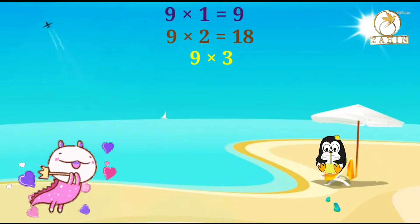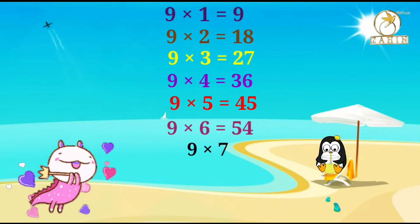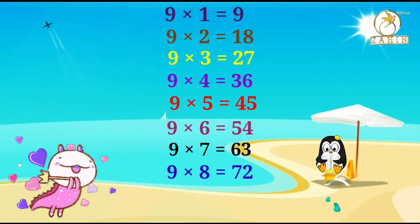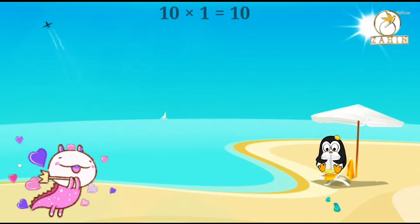9 times 2 equals 18, 9 times 3 equals 27, 9 times 4 equals 36, 9 times 5 equals 45, 9 times 6 equals 54, 9 times 7 equals 63, 9 times 8 equals 72, 9 times 9 equals 81, 9 times 10 equals 90. 10 times 1 equals 10.